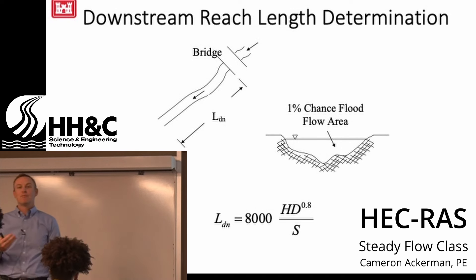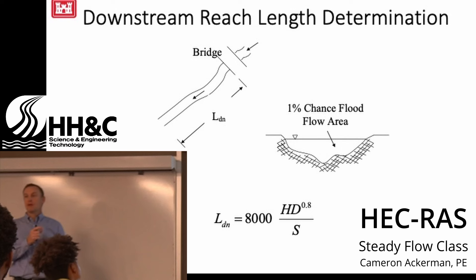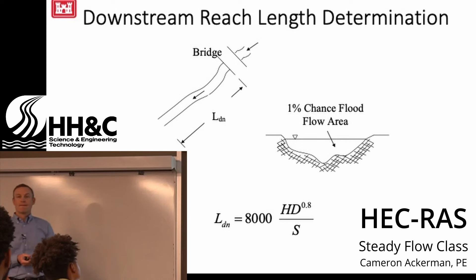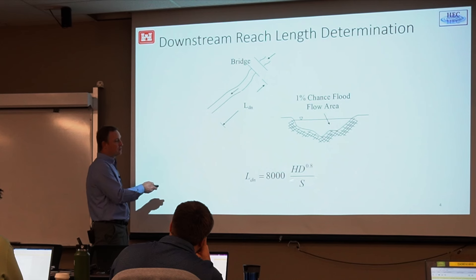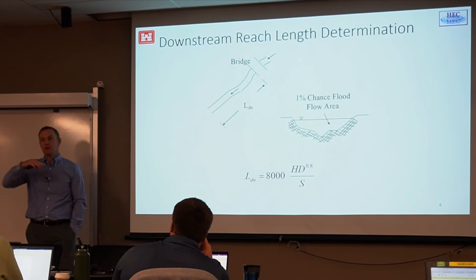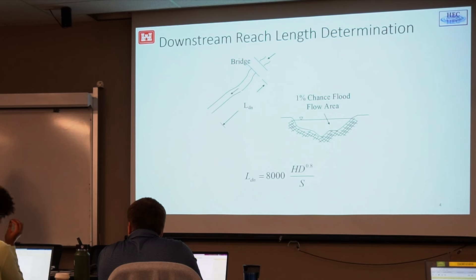For a very steep river compared to a mildly sloped river, do you need to start the boundary condition farther downstream? For a steeper river, the slope is higher, which reduces the downstream distance needed. So for a steeper river, your boundary condition will work back to an appropriate water surface elevation more quickly.